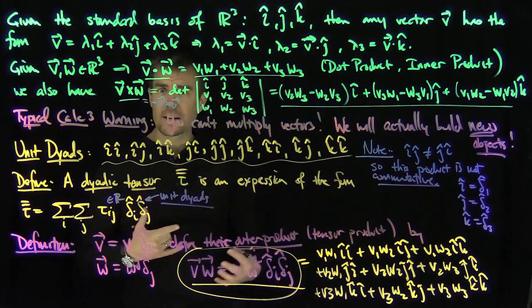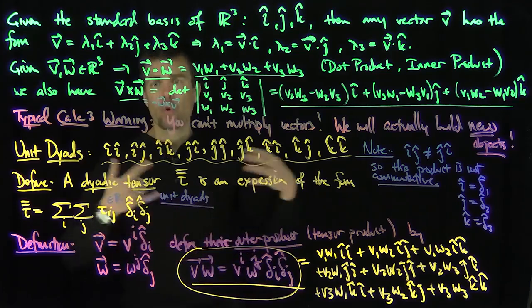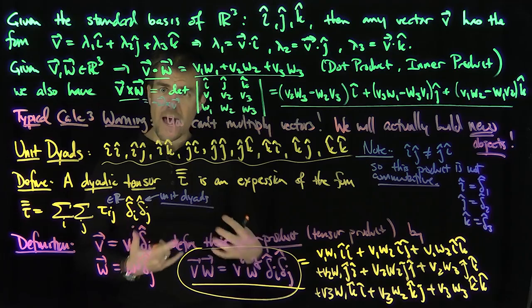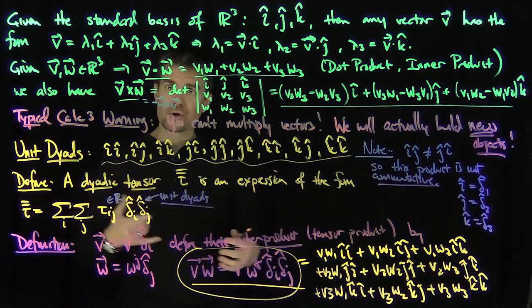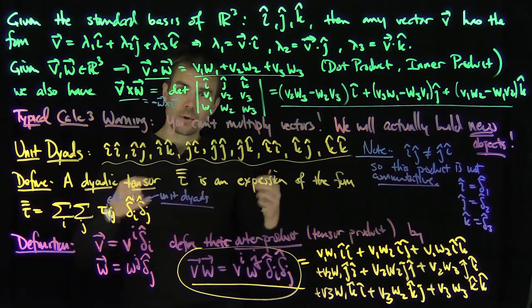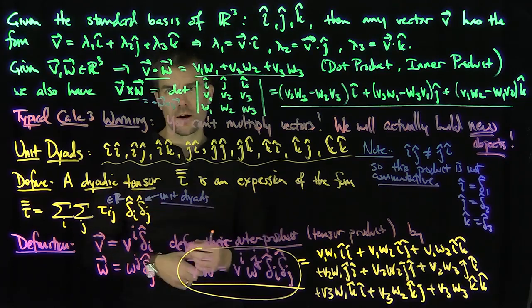Eventually we'll say we can generalize this to tensors of order n, and that will allow me to do differential operations on things like vector fields and construct vector identities and prove all sorts of really useful things when we're dealing with vector quantities. Thank you very much.